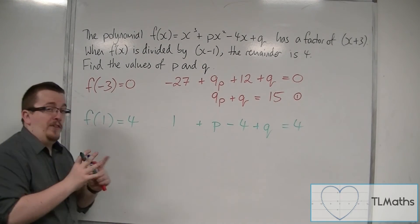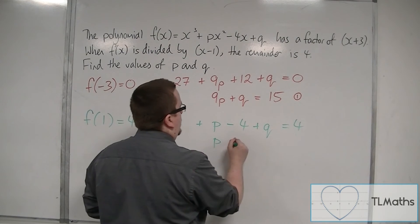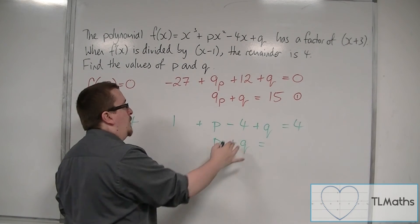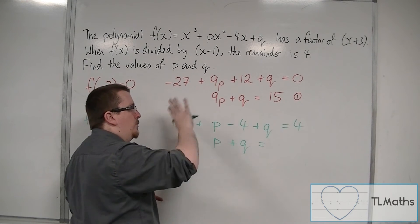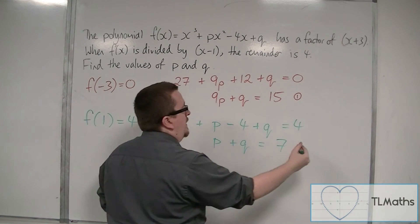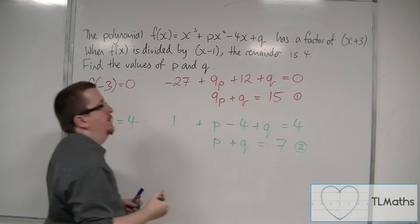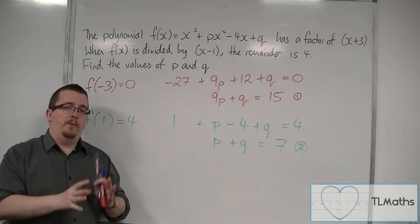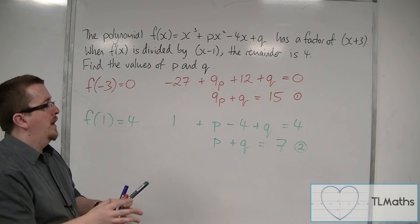So if I simplify this, I have p plus q, 1 take away 4 is minus 3, add the 3 to both sides we get 7, and this is equation number 2. So we now have two simultaneous equations with two unknowns.